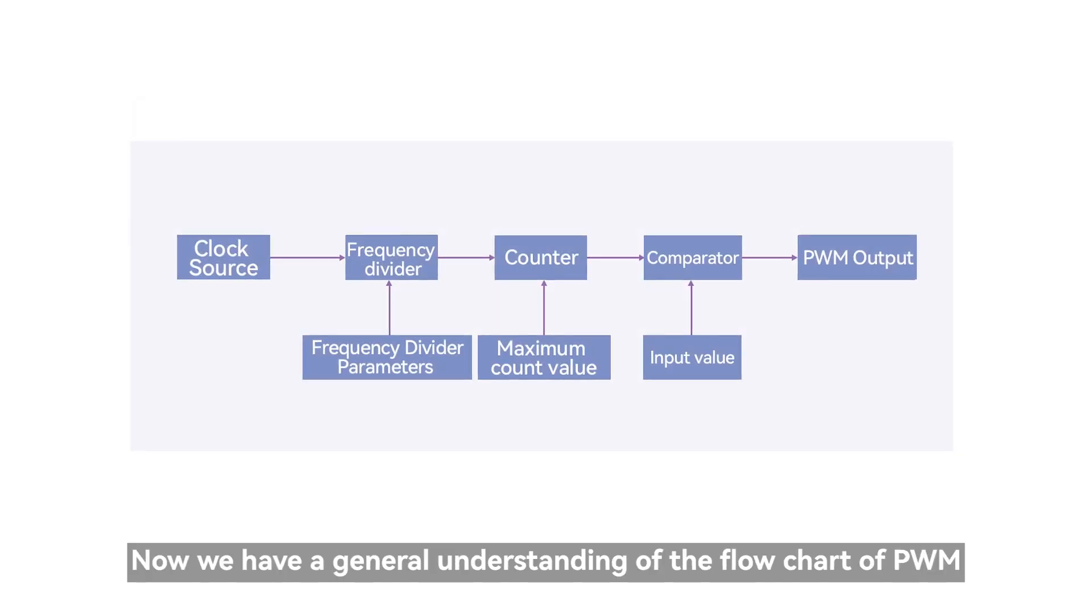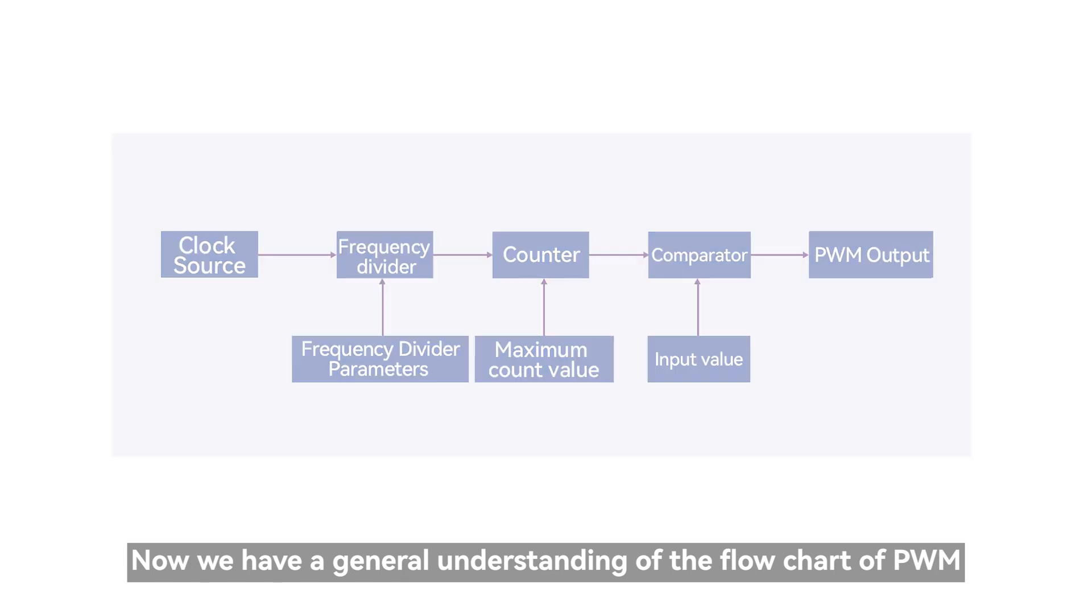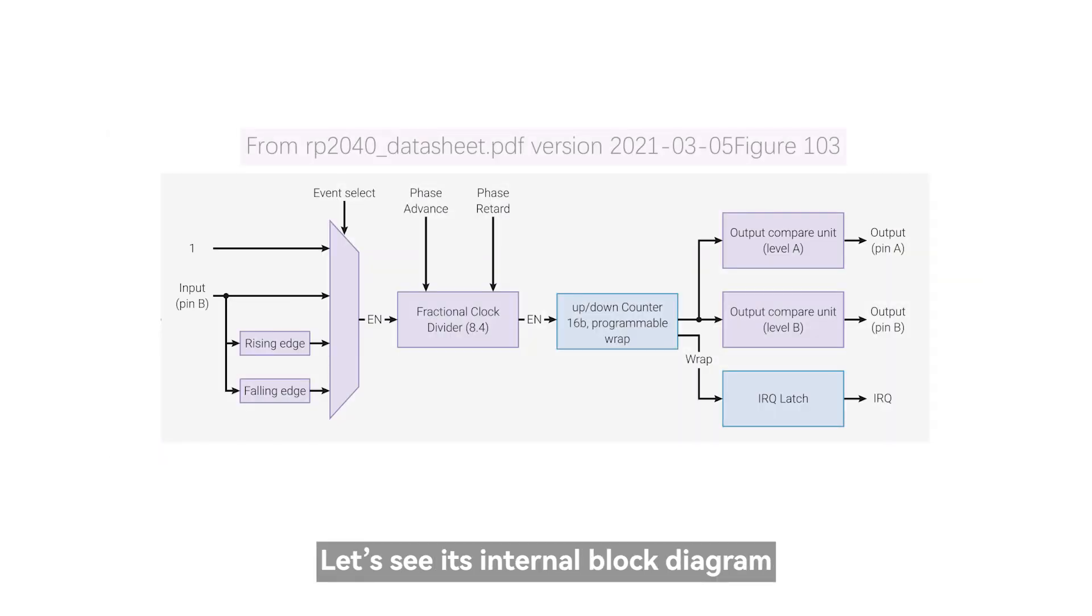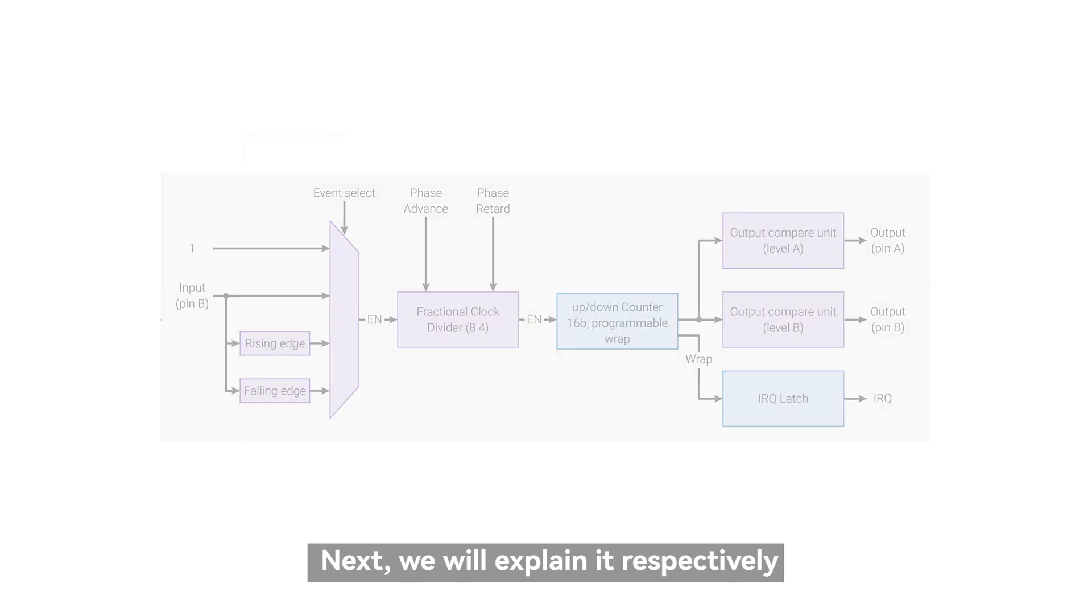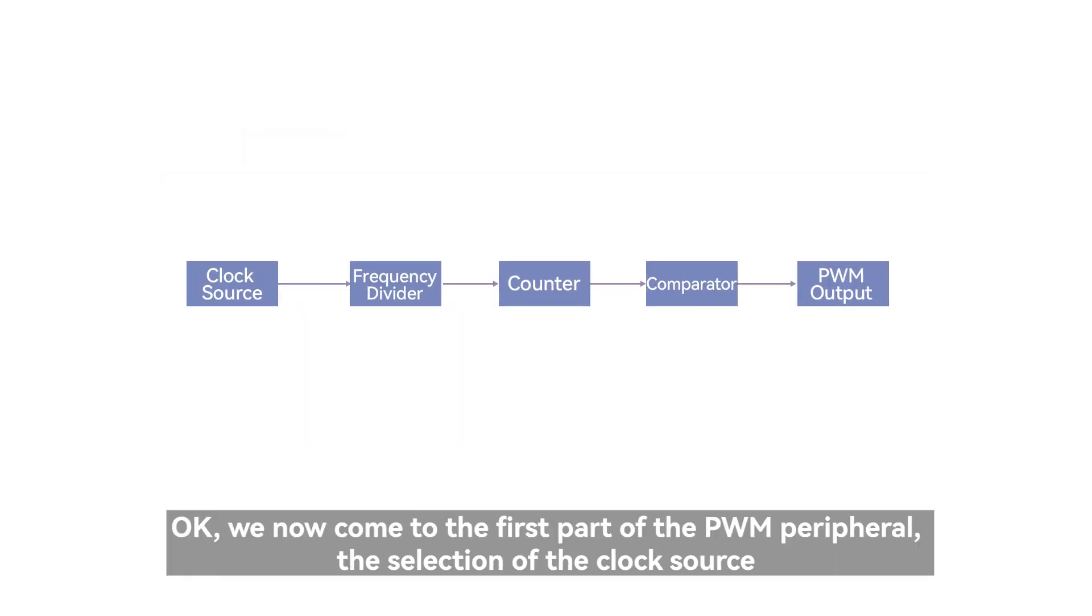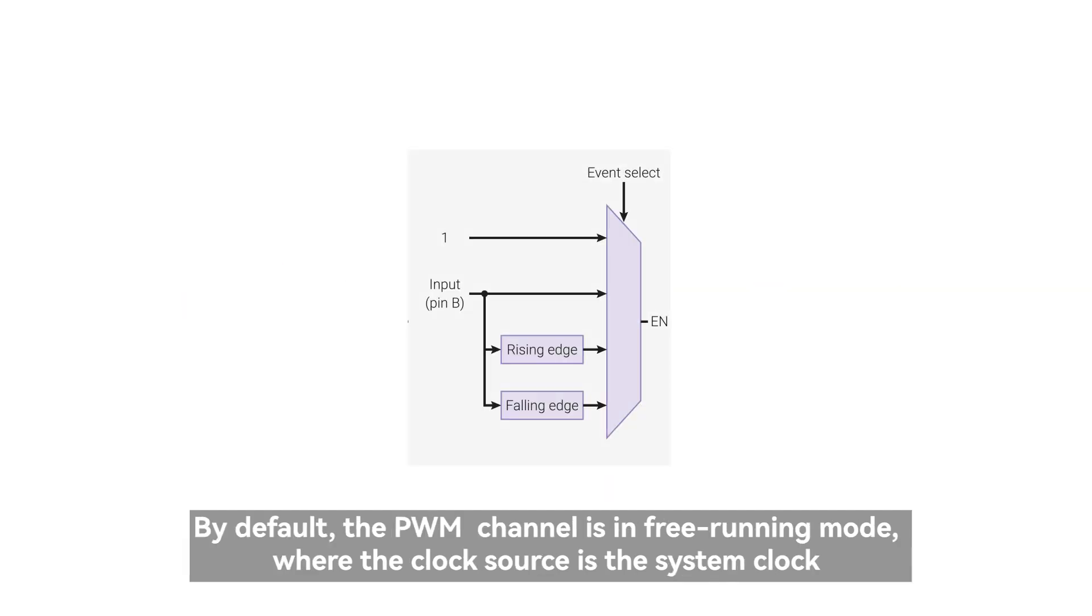Now we have a general understanding of the flow chart of PWM. Let's see its internal block diagram. Next, we will explain it respectively. We now come to the first part of the PWM peripheral, the selection of the clock source. By default, the PWM channel is in free-running mode, where the clock source is the system clock.